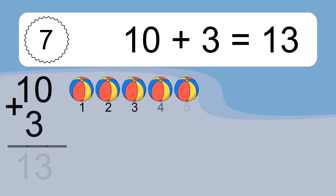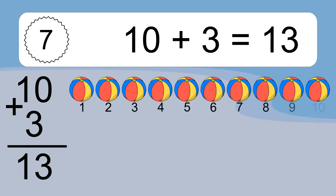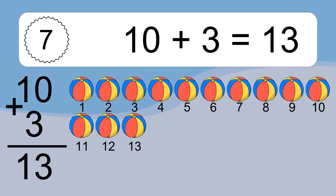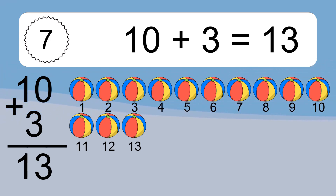Ten plus three equals what? Ten plus three equals thirteen. Let's count it: one, two, three, four, five, six, seven, eight, nine, ten, eleven, twelve, thirteen.